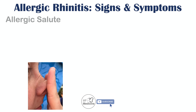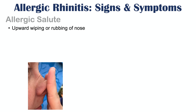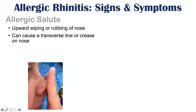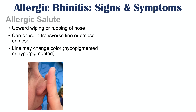There are some other signs of allergic rhinitis. These include allergic salute — where a patient has upward wiping or rubbing of the nose. If a patient does this habitually, they can cause a transverse line or crease on the nose, which can remain as a permanent or long-lasting crease. This line may become hypopigmented (less pigmented) or hyperpigmented (more pigmented).